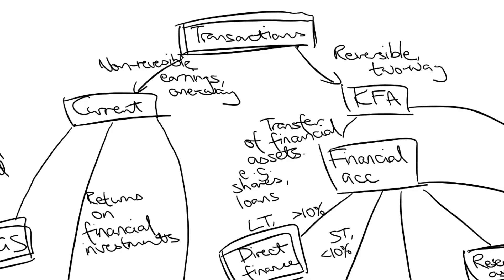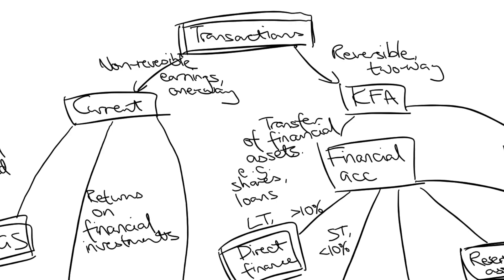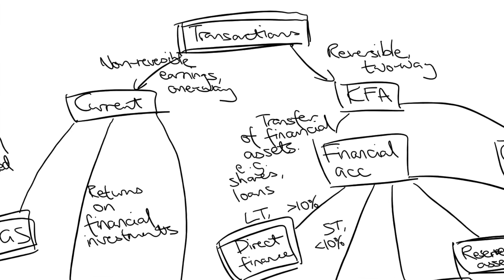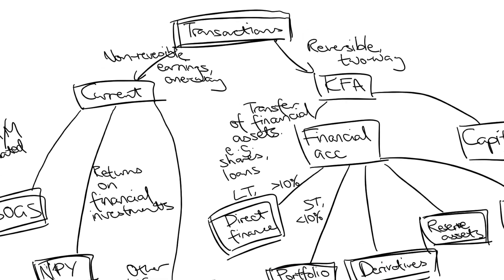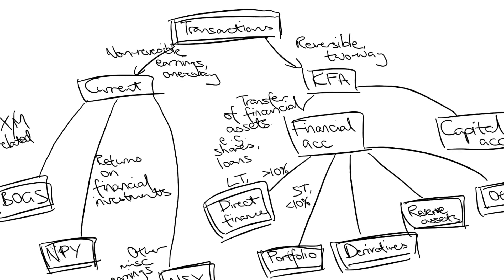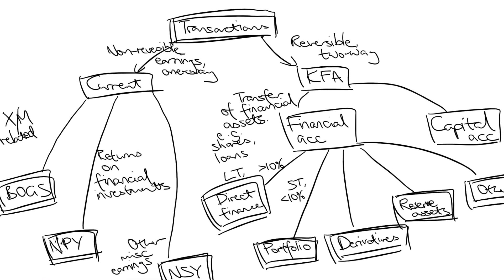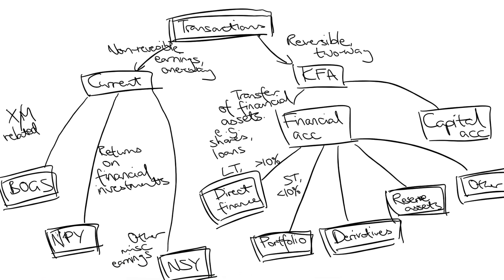Welcome to HSC Economics Made Easy. This video is part two of a series on the balance of payments. Last lesson we learned about the different accounts and sub-accounts into which transactions get sorted, including the current, financial, and capital account. You can find the link to that video in the description below. Today I want to talk about the relationships between these accounts and also some general trends.